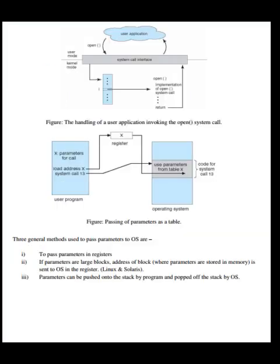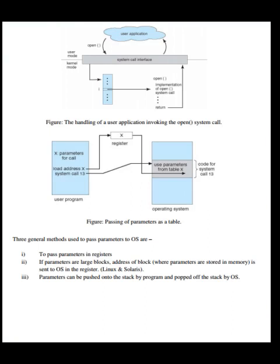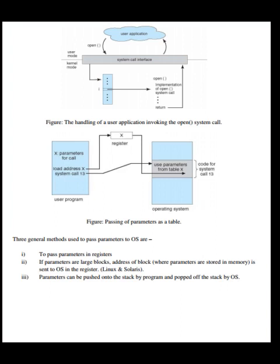Three general methods are used to pass parameters to the OS: passing parameters in registers; if parameters are large, a block where parameters are stored in memory is sent to the OS in a register (used in Linux and Solaris); or parameters can be pushed onto the stack by the program and popped off the stack by the OS.